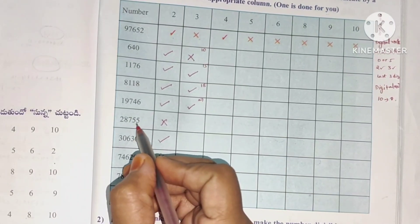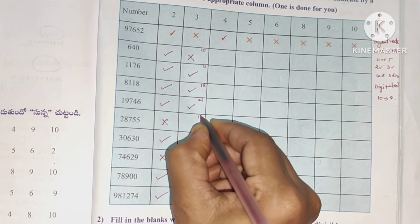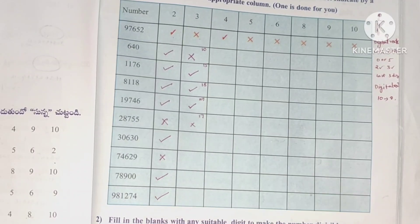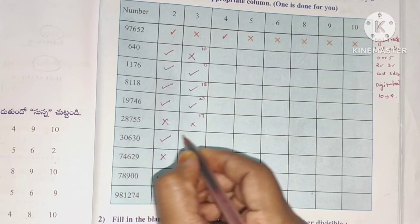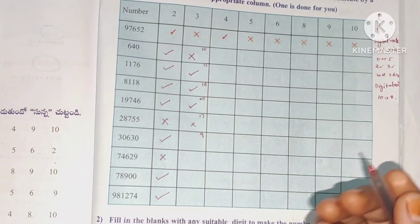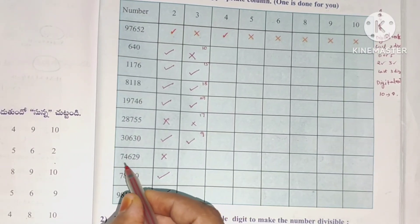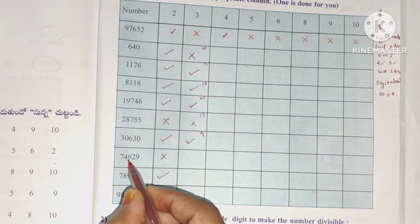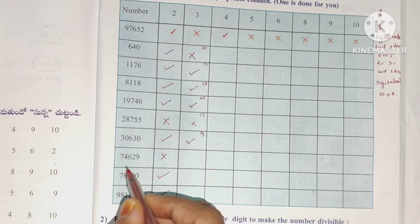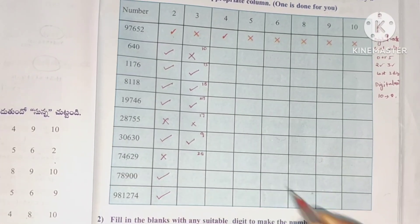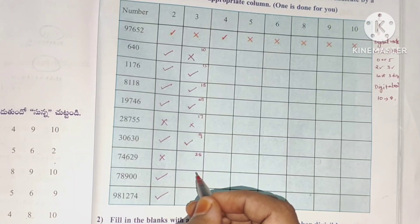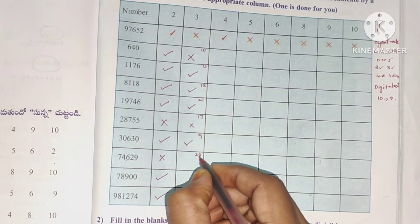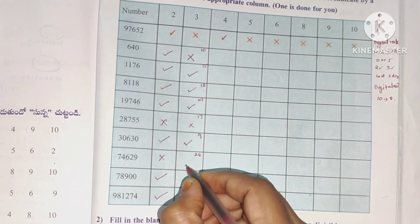Sum is 17 — 17 is not divisible by 3, so cross. First adds to 9 — 9 is a multiple of 3, so yes. Sum adds to 18 — not there. 28 is not divisible by 3: 2 plus 8 is 10, which is not divisible by 3, so cross.